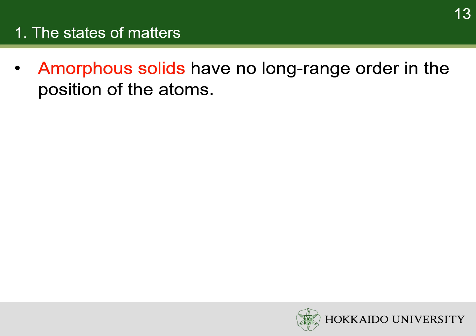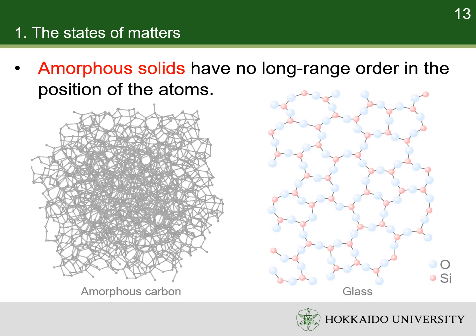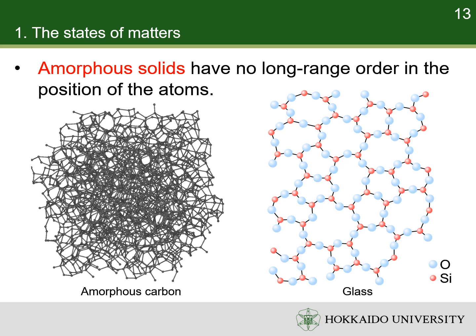In other materials, there is no long-range order in the position of the atoms. These solids are known as amorphous solids. Examples include polymers, glass, and amorphous carbon.